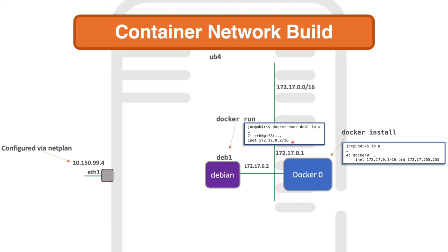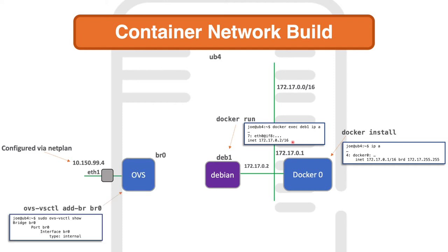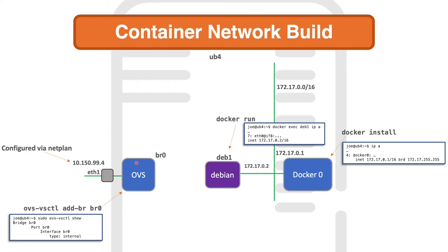The next step is to configure OpenVSwitch. I'll be installing all required packages first — Docker, then OpenVSwitch — before doing the configuration. Installing OpenVSwitch doesn't do anything to the network, unlike Docker. The first step when configuring OpenVSwitch is to add a bridge using the command 'ovs-vsctl add-br BR0'. You can verify it with 'ovs-vsctl show', which will display the new bridge marked as internal.